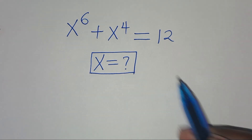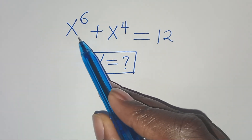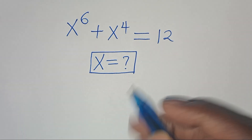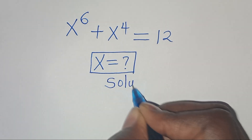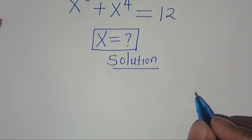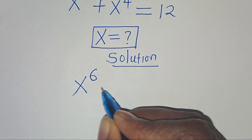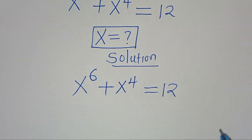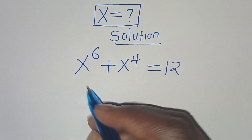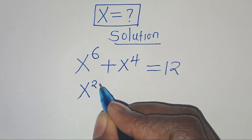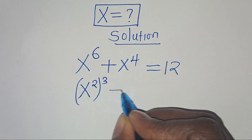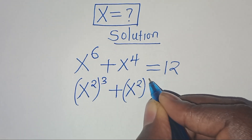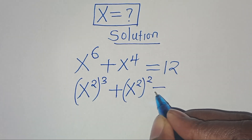Hello everyone, welcome to solve this nice algebra problem: x to the power of 6 plus x to the power of 4 equals 12. What are the values of x? We can express x⁶ as (x²)³ and x⁴ as (x²)².